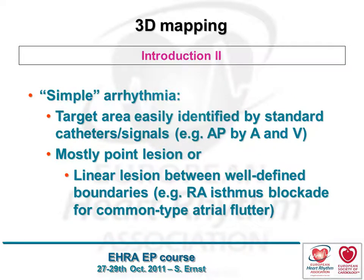A simple arrhythmia substrate, in my view, is something that is fairly easy to find where you can essentially burn at one spot — for example, pathways. Sometimes in pathways that have failed ablation I might consider a 3D mapping system, but mostly we need point lesions for these. For flutter, we know exactly what the boundaries are. Jose Angel has shown beautifully how to find the tricuspid and the IVC end. You're essentially dragging the catheter along and you know how to find the structures on X-ray, so what do you need a mapping system for?